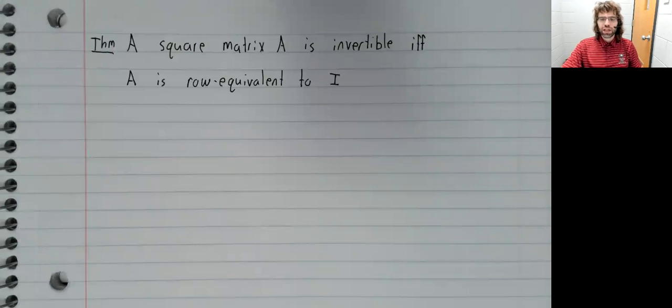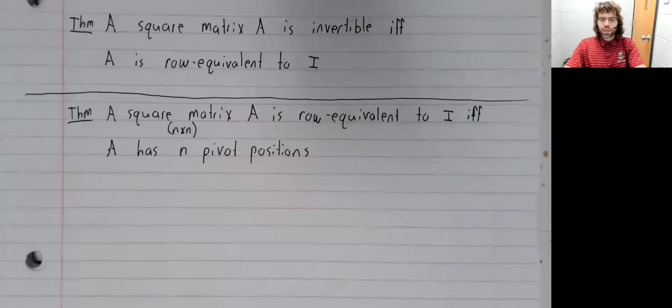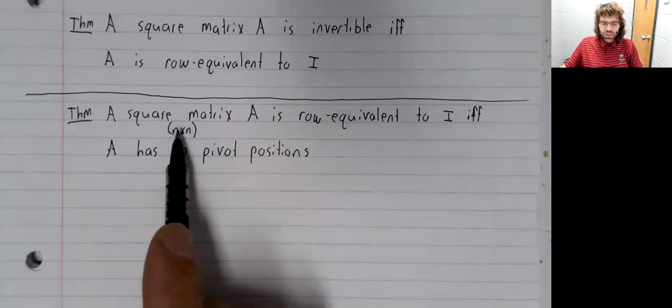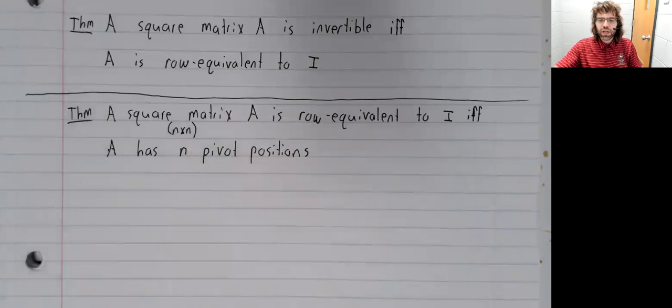Our next theorem: a square n by n matrix is row equivalent to I if and only if it has n pivot positions.